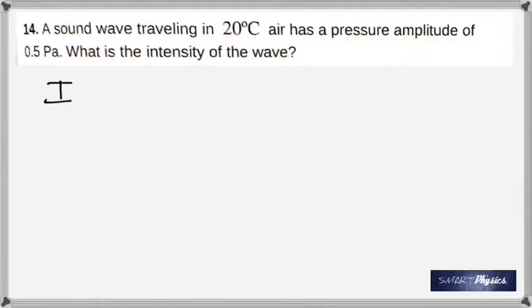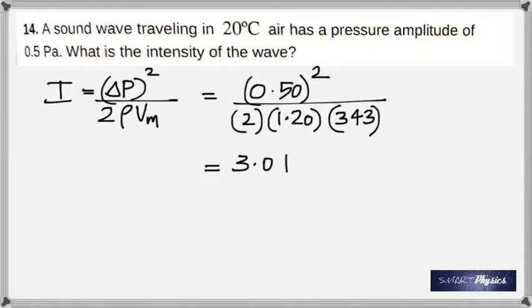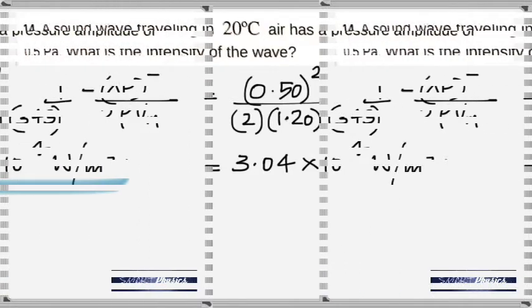Question 1: Sound wave traveling in 20 degrees Celsius air has a pressure amplitude of 0.5 pascal. What is the intensity of the wave? The intensity of the wave is square of the pressure amplitude divided by 2 times density times the velocity in that medium or material. The density of air is 1.20 kilogram per meter cubed times the speed of sound is 343 and you get 3.04 times 10 to the negative 4 watt per meter squared.